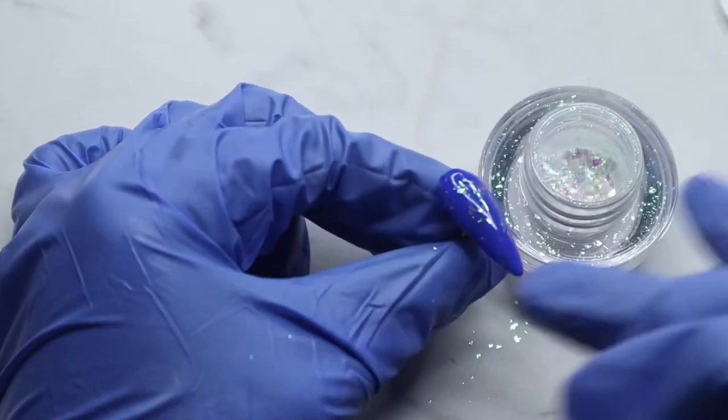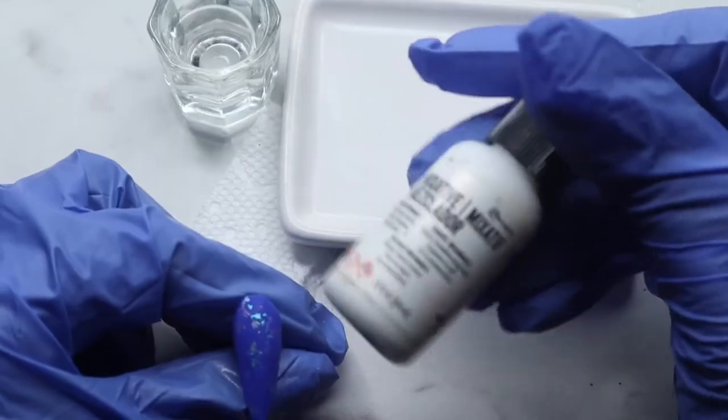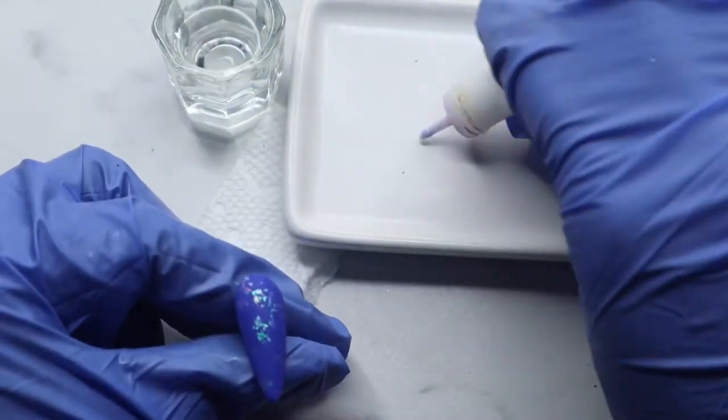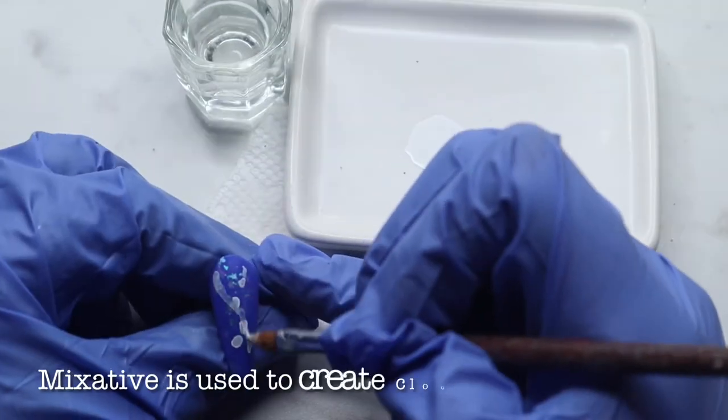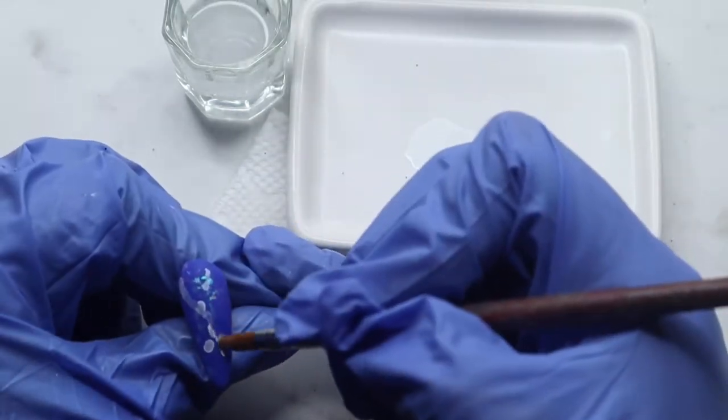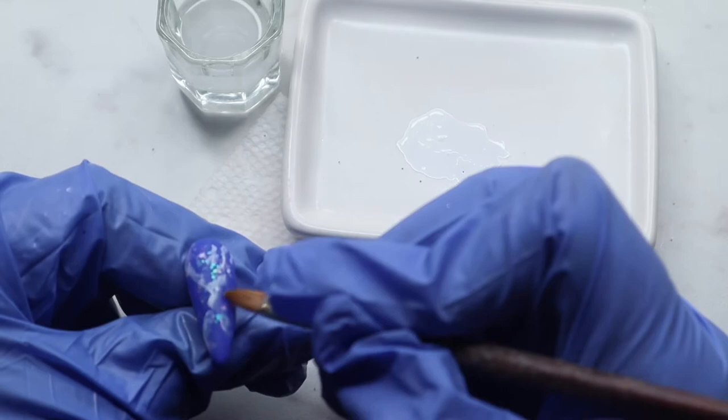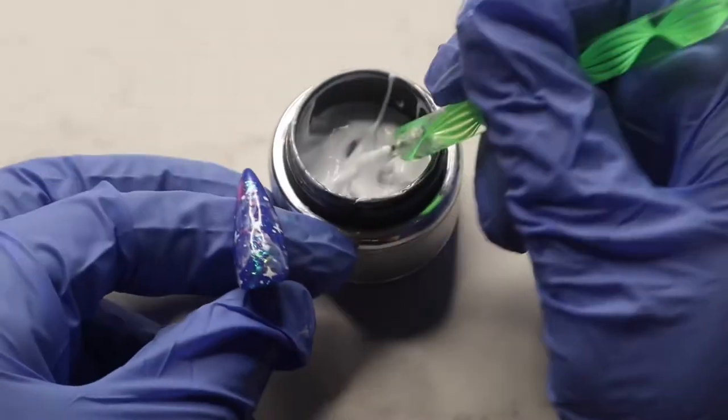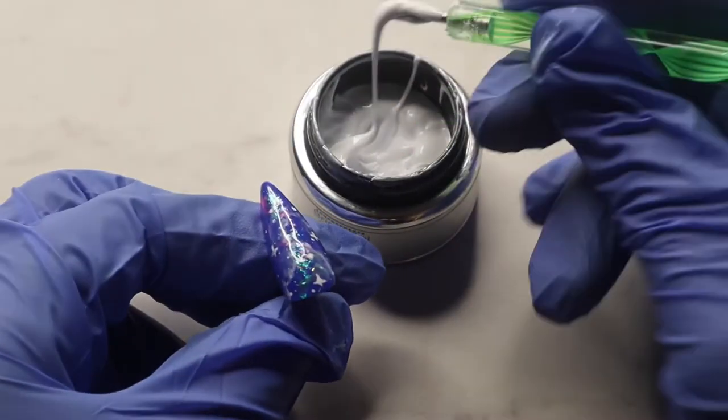After I place the flakes on, I then proceed with applying CND's matte top coat as I would like to create a cloud look on my nail. To create the cloud look on my nail, I use a product from Michael's called Mix-A-Teef. This really helps to give that cloudy effect.